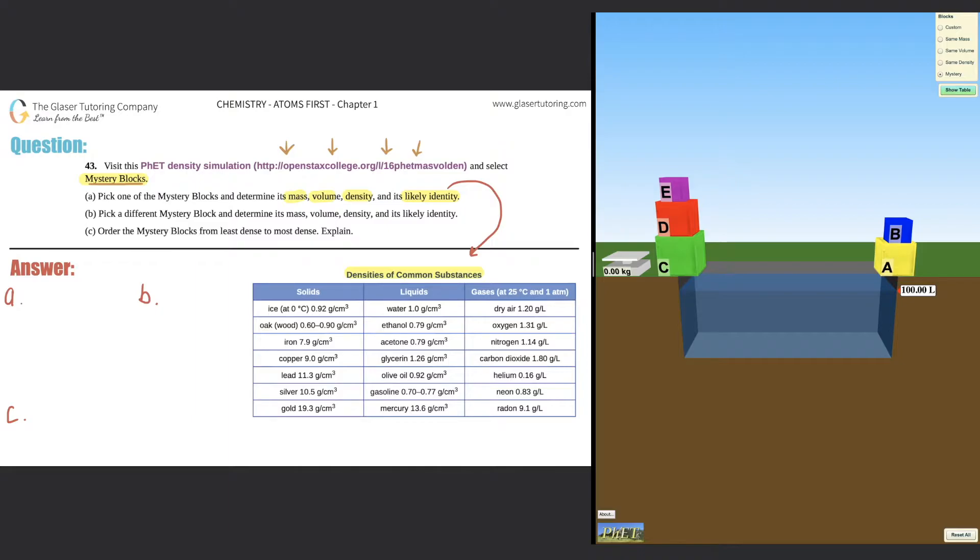So let's pick anyone. I'll pick my favorite color. My favorite color is red. So I'm going to move the purple one and I'm going to move the green one. And I'm going to work with this nice red one, block D. We just got to find the mass, volume, and density.